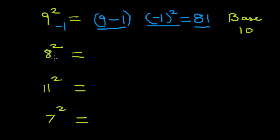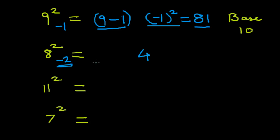The second example: 8 squared. 8 minus 10 is minus 2. We square this number — minus 2 squared is 4. Then 8 minus 2 is 6. So the answer is 64.